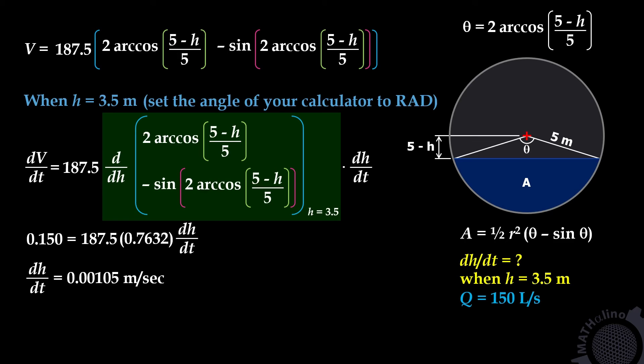To convert this answer into centimeters per minute, multiply by 100 to convert meters to centimeters, and by 60 to convert seconds to minutes — that is, multiply by 6,000. The answer is 6.29 centimeters per minute.